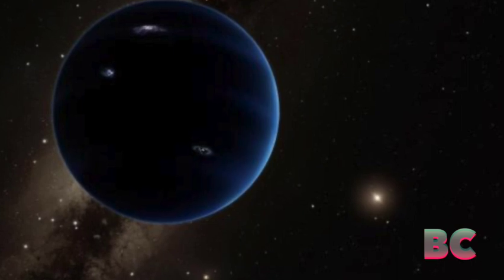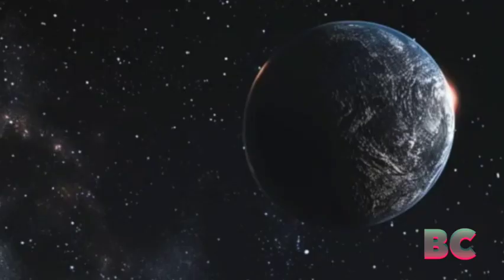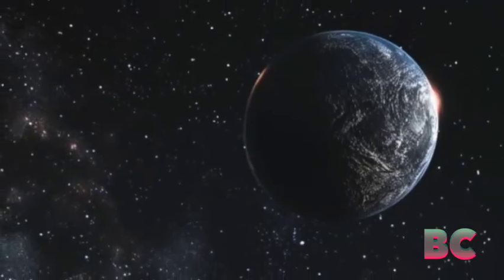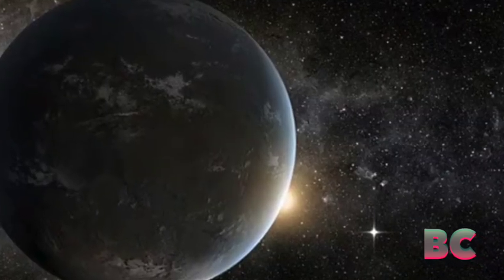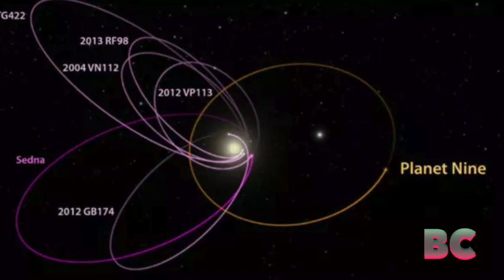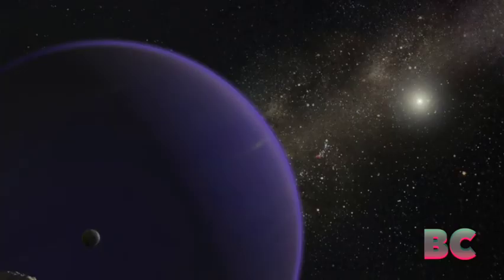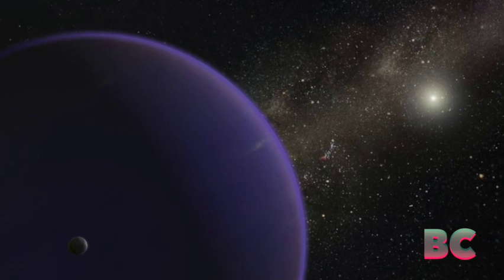New evidence supporting the existence of a hidden planet in our solar system has emerged. According to scientists, astronomers have long proposed the presence of an undiscovered planet to explain peculiar behavior observed at the solar system's outer edges, far beyond Neptune.